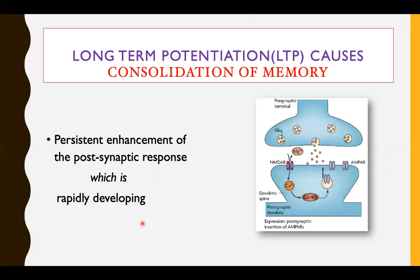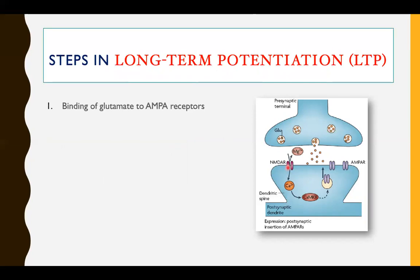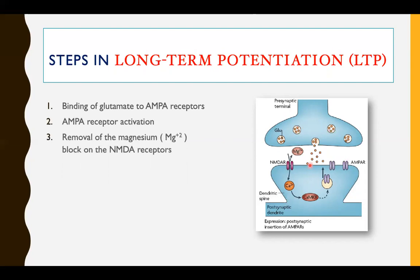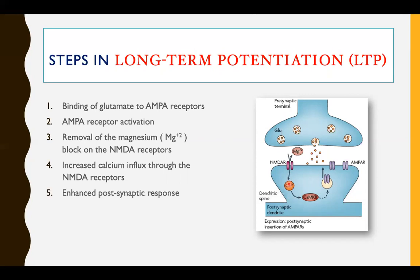Glutamate is responsible for the consolidation of memory through a phenomenon called long-term potentiation (LTP) — a persistent enhancement of the post-synaptic response that occurs very rapidly. Both AMPA and NMDA receptors have a role, though LTP is said to be NMDA-mediated. First, glutamate binds to the AMPA receptor; this removes the magnesium block from the NMDA receptor, resulting in calcium influx and enhanced post-synaptic response.